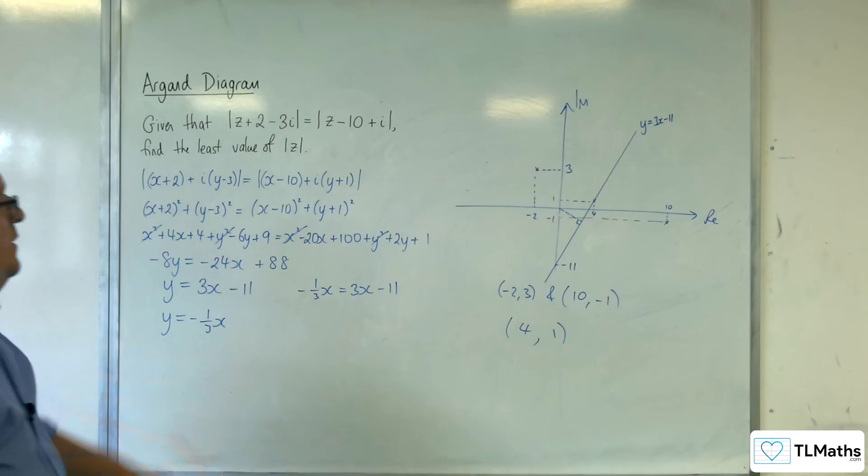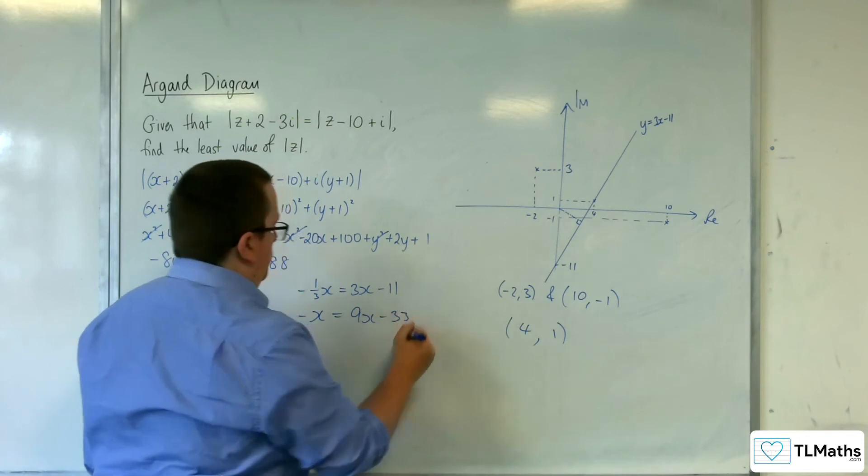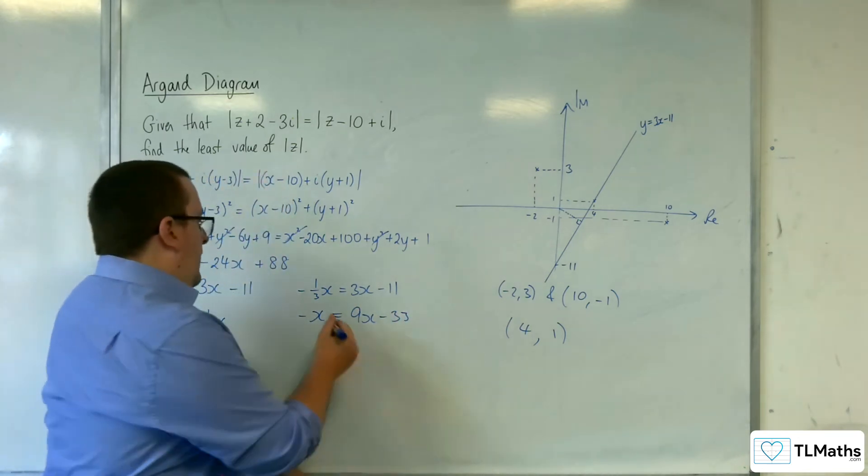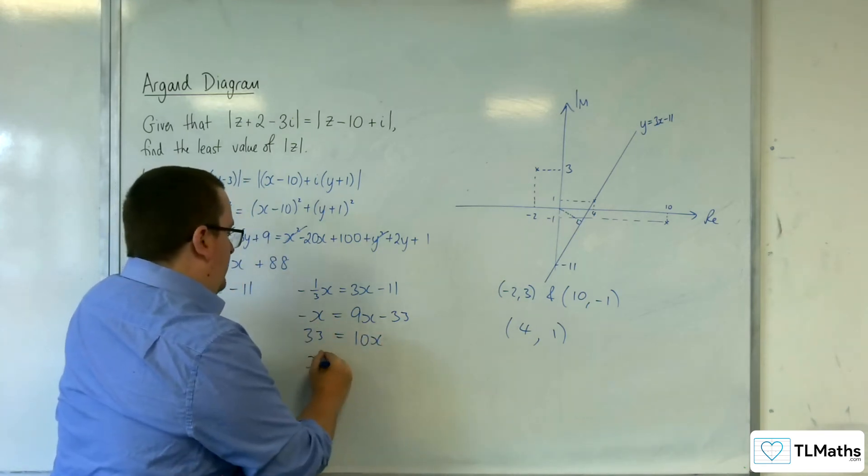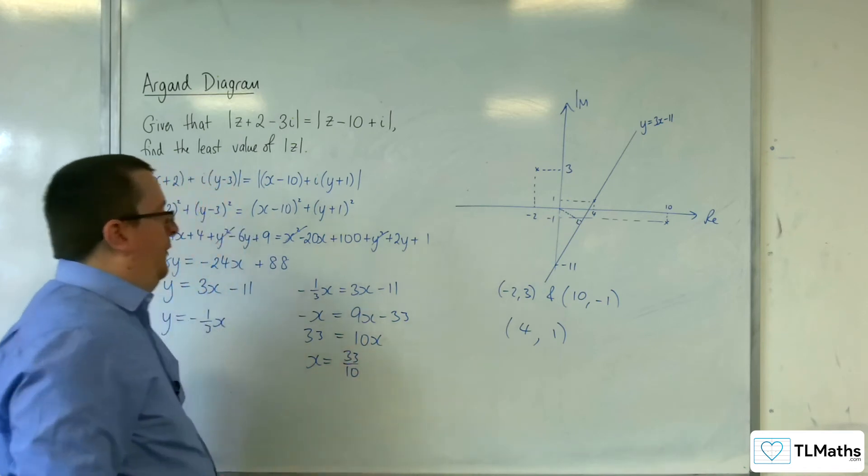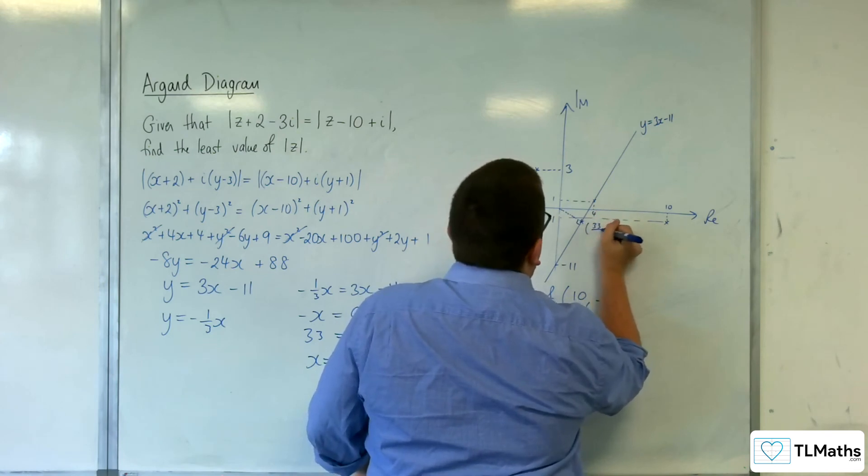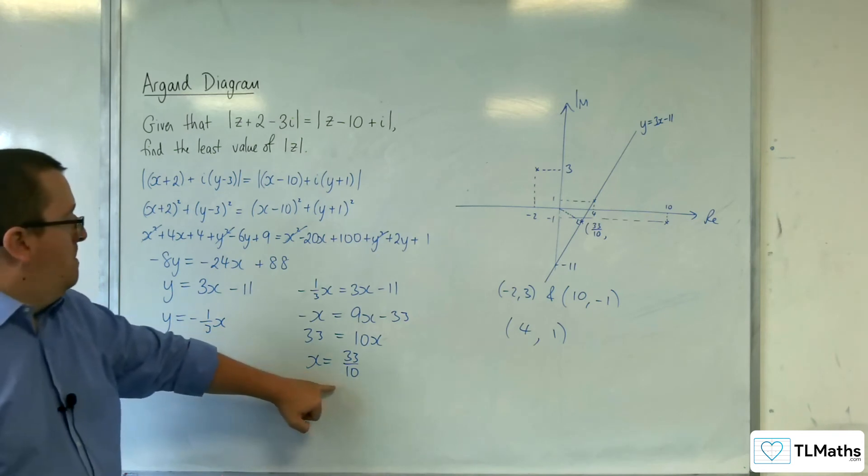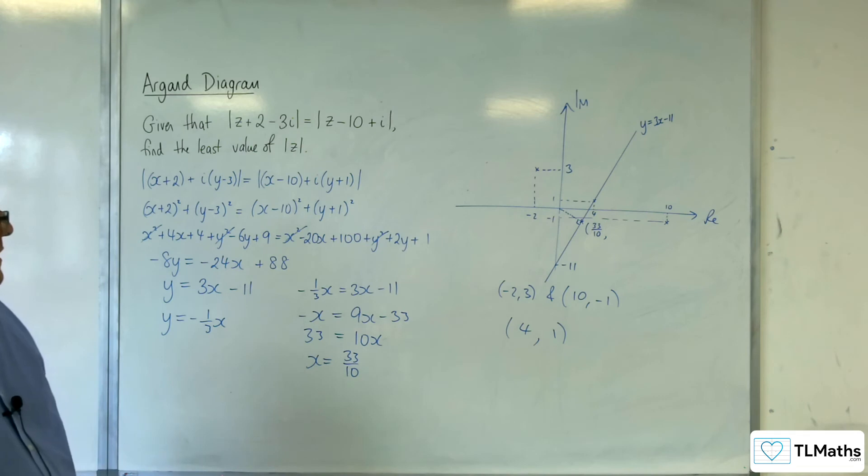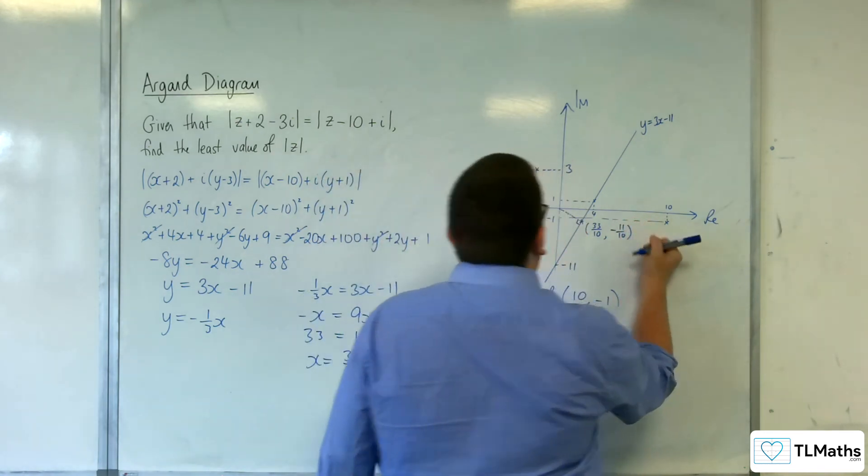Let's multiply through by 3 to make this a little bit easier for ourselves. So minus x is 9x take away 33. So add x to both sides and add 33 to both sides. So x is going to be 33 tenths. So this point here is 33 tenths. And the y coordinate, multiplying that through by minus 1 third, will be minus 11 over 10.